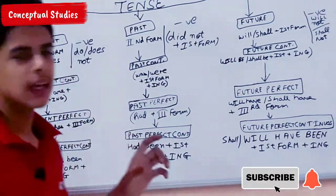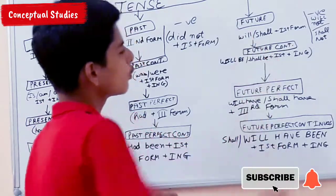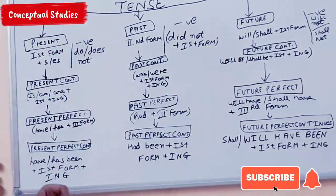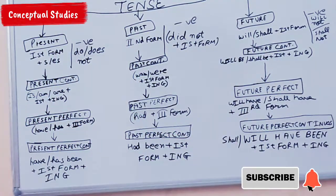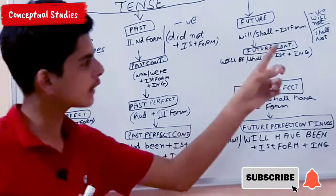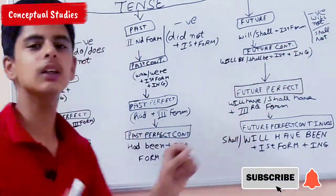For Future tense: we use 'will' or 'shall' plus the first form for positive sentences. If the sentence is negative, then we use 'will not' or 'shall not'.